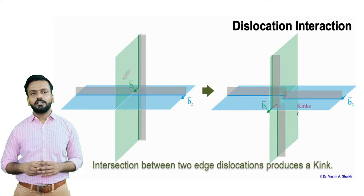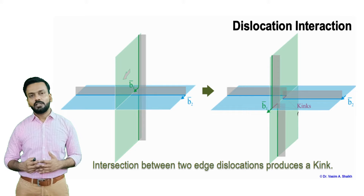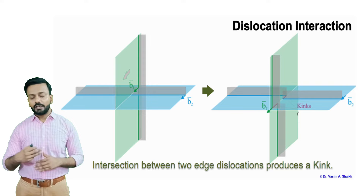Similarly, a kink is shown interacting with the dislocation line — it moves the dislocation line in the same plane, just a little bit ahead within that plane. That is a kink.